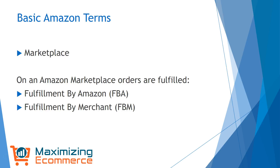Then there's Fulfillment by Merchant, or FBM. As a seller, you have the ability to send out the orders yourself. So if an order came in for, say, a coffee press, you get the order and ship it from your house, warehouse, or office. Amazon is basically just acting as the place where the transaction was made and collecting a small commission fee. You could theoretically set up products to do both ways. It's better to do FBA if you can, because you tend to get a bump in sales by being able to sell as Prime.